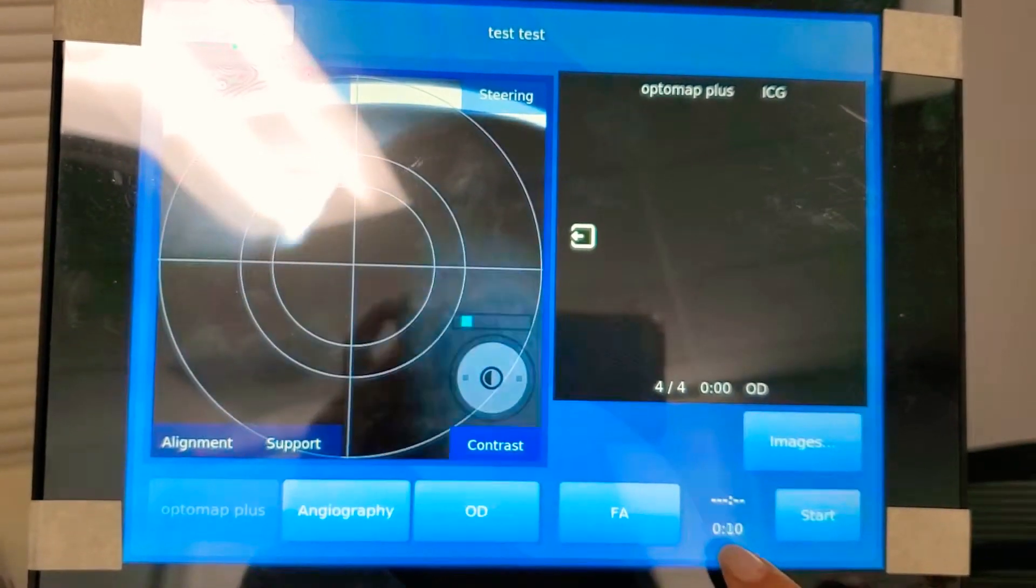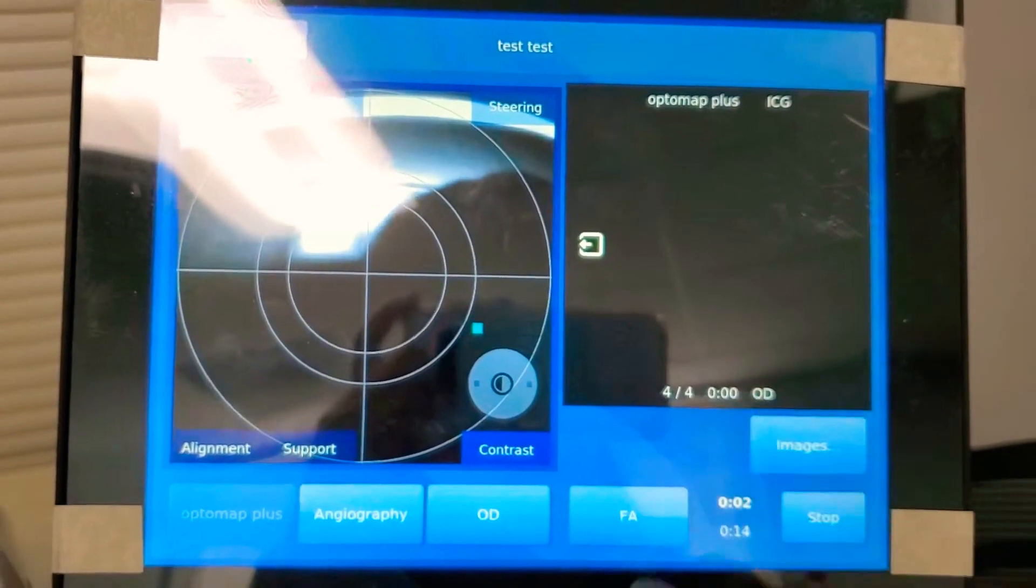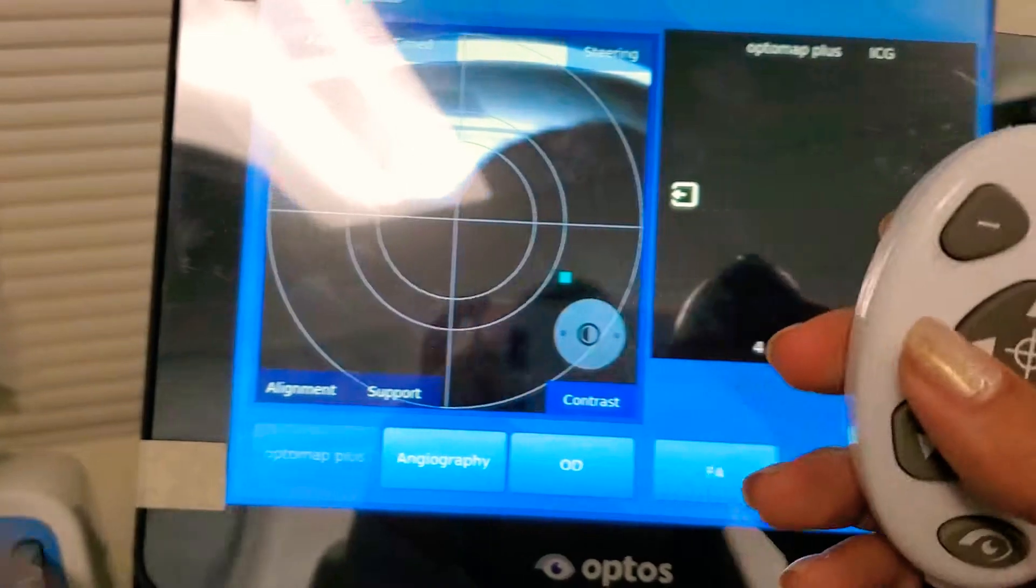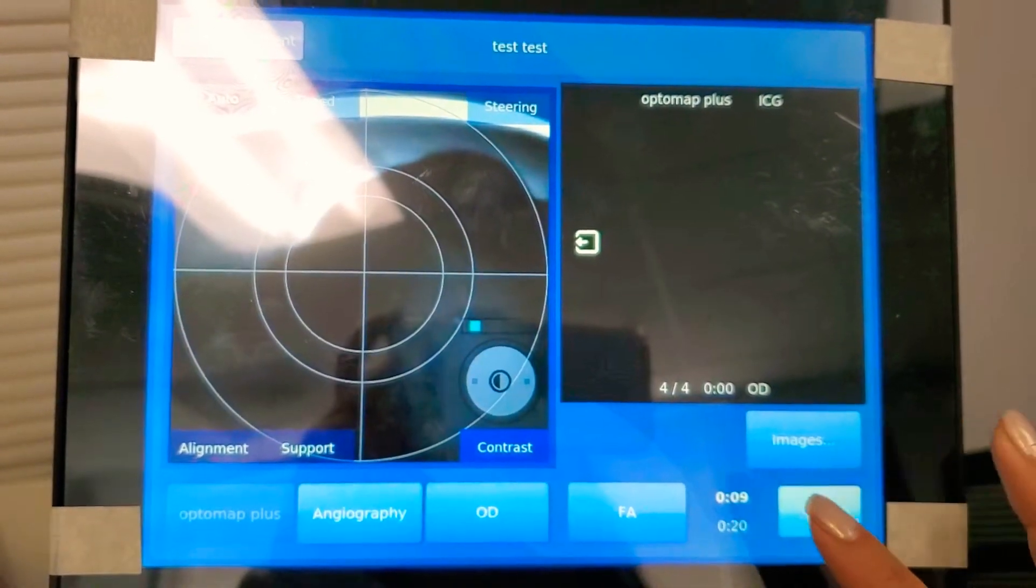And then we're going to do FA. And the timer's right here. So it's already started. You just click start what I actually only did. And then once you've got... Same thing. Make sure that it's on green. Take the photo. And then we can stop.